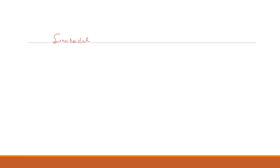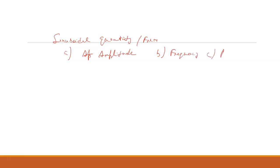First of all, we have to discuss what is the meaning of sinusoidal quantity or form. Basically, three things are required to understand this: the first one is amplitude, the second one is frequency, and the third one is phase.